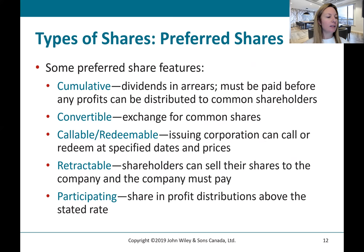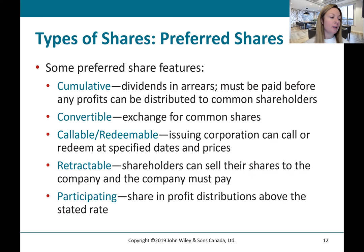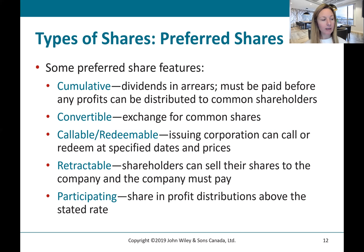Companies can issue more than one class of preferred shares, and some common preferred share features include the following. They can be cumulative, meaning that dividends on cumulative shares not paid in any given year are known as dividends in arrears. These dividends must be made up in a later year before any profits can be distributed to common shareholders. There is no liability until the board of directors declares a dividend. It's worth noting that if the corporate charter is silent about the cumulative feature, the preferred share is assumed to be cumulative.